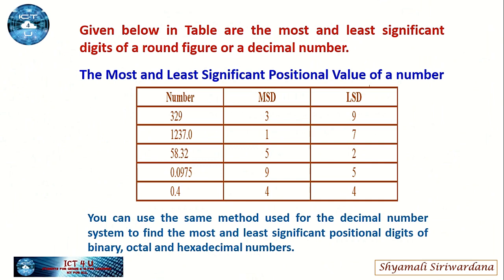Below is a table showing the most and least significant positional values of decimal numbers. The most and least significant positional value of a number — here is the chart. First one: 329. Here, the MSD is 3 and LSD is 9.